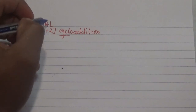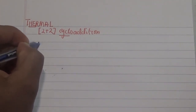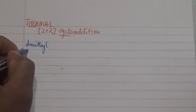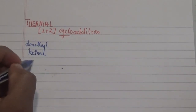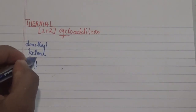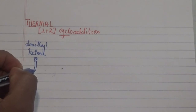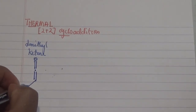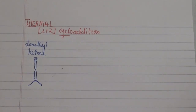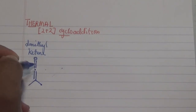The first species is called dimethyl ketene. This compound has a chemical structure where oxygen is double-bonded to a carbon, and that carbon also has another double bond with another carbon. This is quite interesting because this central carbon has two double bonds attached to its sides.